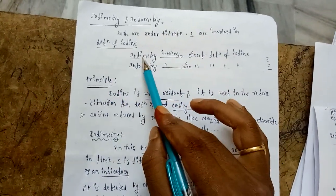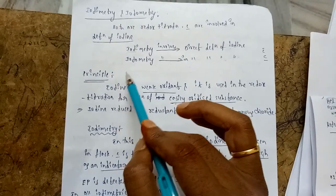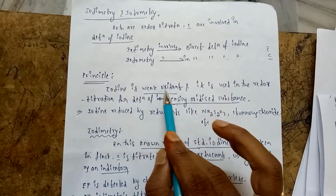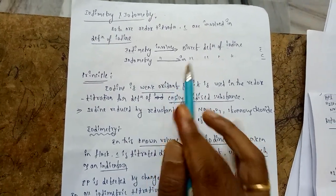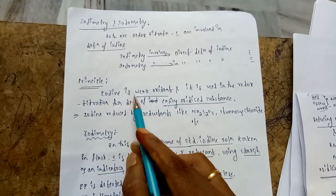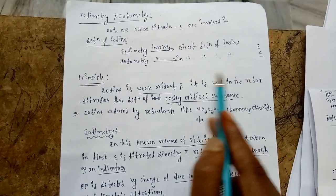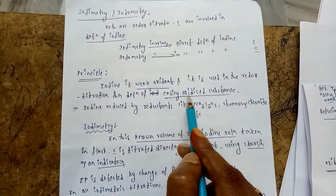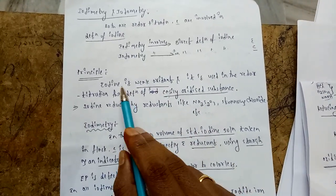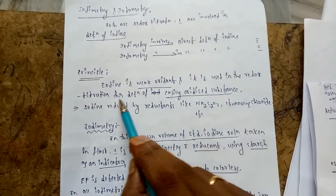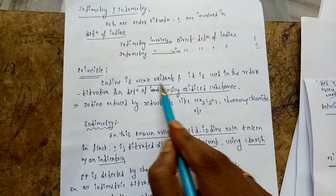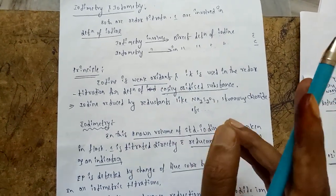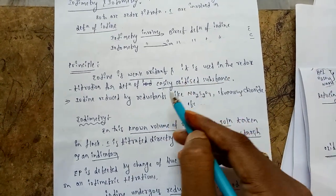Before going to the principle, first we should know how iodine acts. Iodine is a weak oxidant — a weak oxidizing agent — it will gain electrons. It is used in redox titration for the determination of easily oxidized substances, meaning reducing compounds. Why easily? Because iodine is weak. By using iodine we cannot determine strong reactants; only we can determine easily oxidized substances.